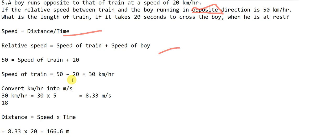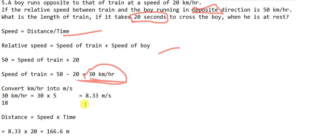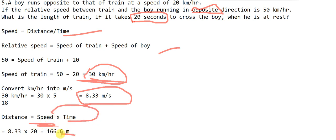Now we convert 30 km/h into m/s by multiplying by 5/18, giving 8.33 m/s. Distance = speed × time = 8.33 × 20 = 166.6 meters. So the length of the train is 166.6 meters.